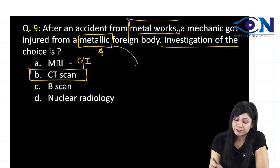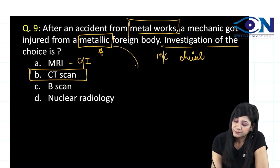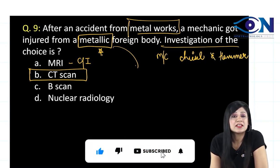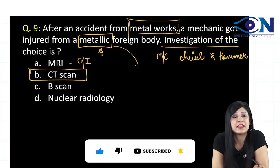metallic foreign body and most common foreign bodies that we are getting is the chisel and hammer. Another important question, that is your chips of the iron. That is the reason why MRI is contraindicated.